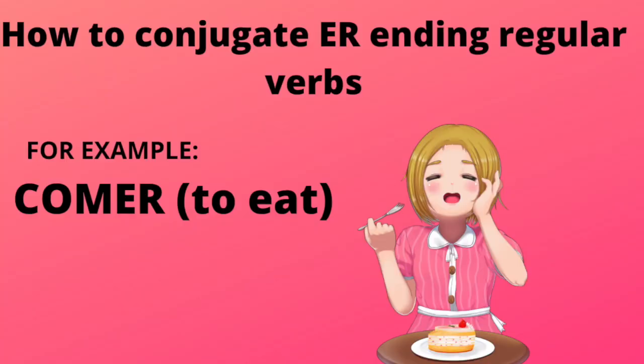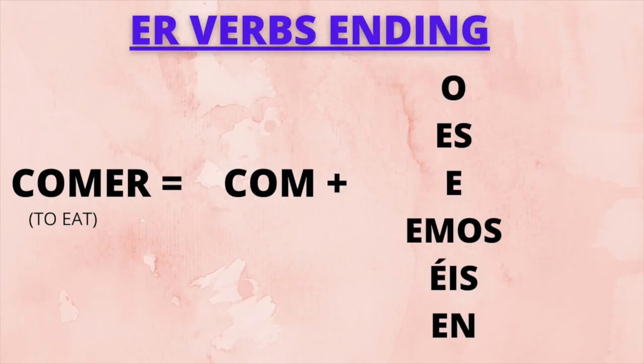Now, let's take some examples of -er ending regular verbs. For example, comer — to eat. If we conjugate this verb, the root will remain the same, only the ending will change, which is -er, in a particular manner. It goes like: -o, -es, -e, -emos, -éis, -en.